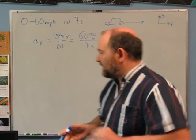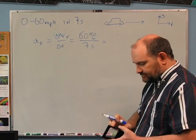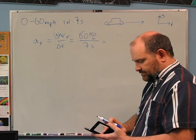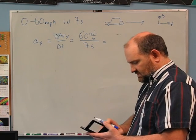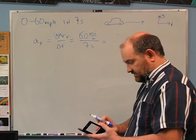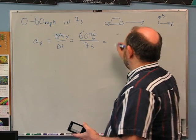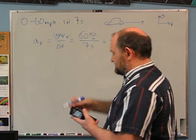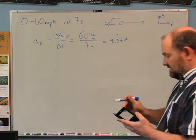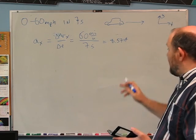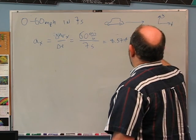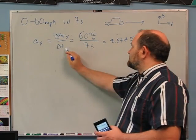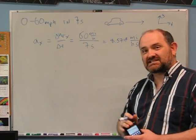60 divided by 7 gives 8.5714 — too many significant figures. We really only have one significant figure because of the 7, but I'll keep 2 just for fun. This gives miles per hour per second, which is an acceleration unit — speed over time.